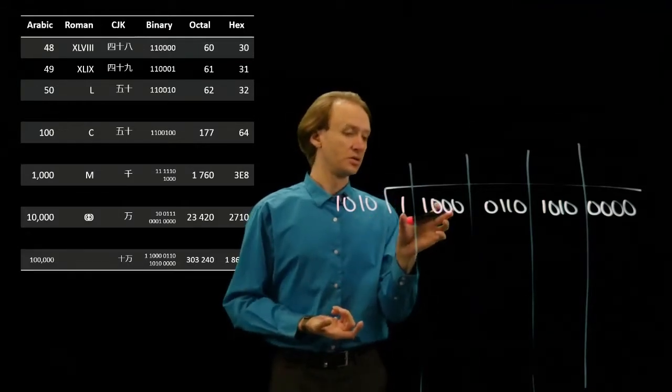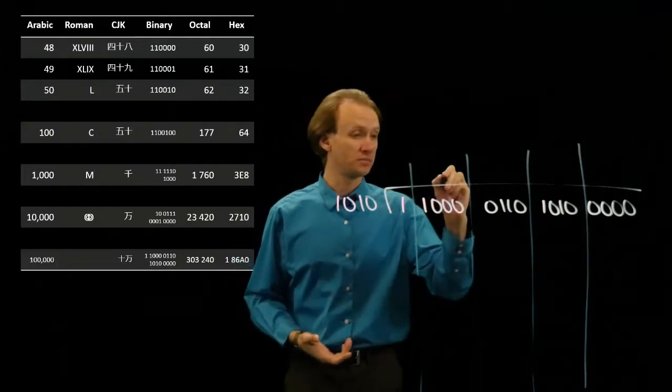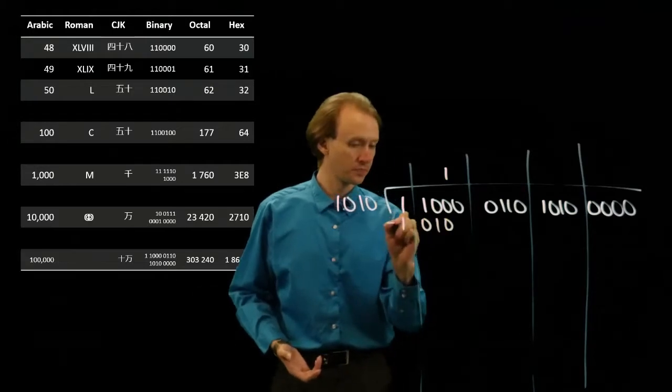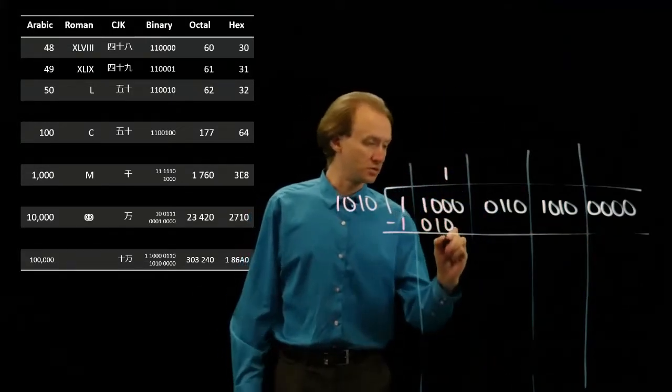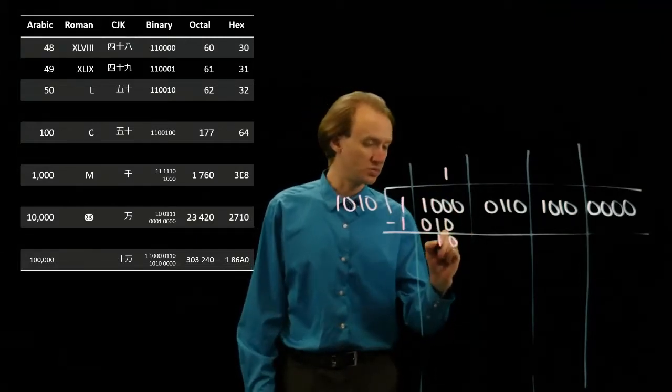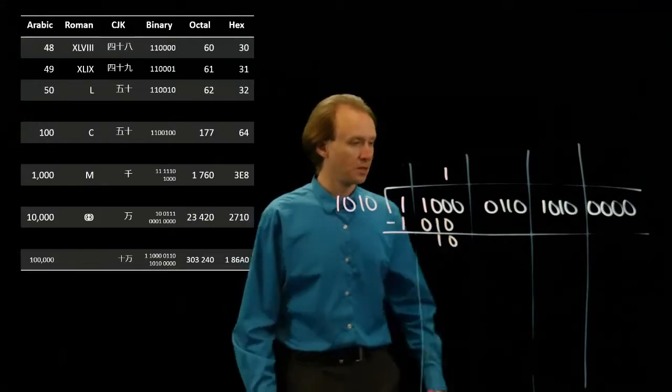In this case, this number is larger than this one. So I can do the subtraction here. 0 minus 0 is 0. I'll need to borrow here. So 10 minus 1 is 1. And then I have 10 minus 10 is 0.